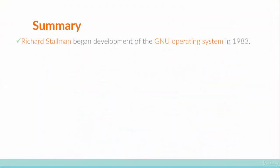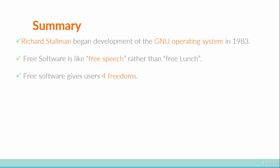Let's do a quick recap of what we've learned. In this video you learned about Richard Stallman beginning the development of the GNU operating system in 1983, with the idea of creating a Unix-like operating system made of entirely free software. When we say 'free software' we mean software that provides users with certain freedoms — think free speech rather than free lunch. The four freedoms give users the ability to run programs as they wish, and to study how a program works and change it so it does the computing as they wish.